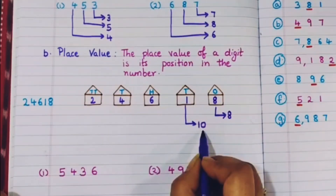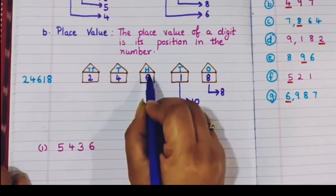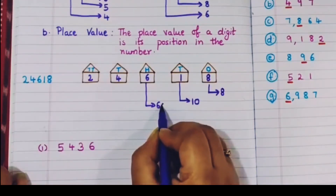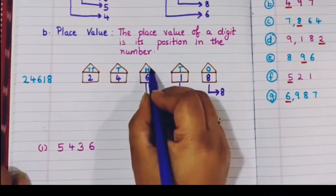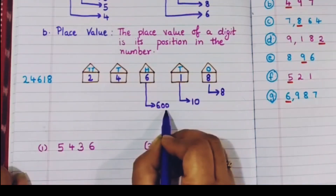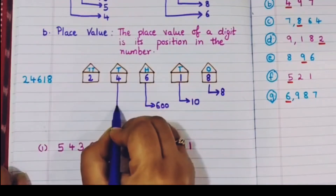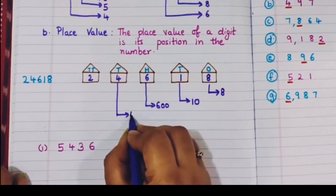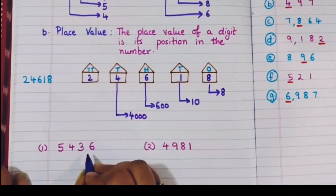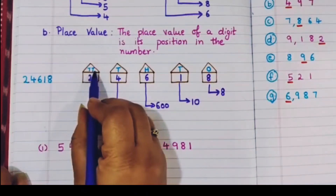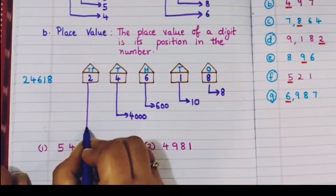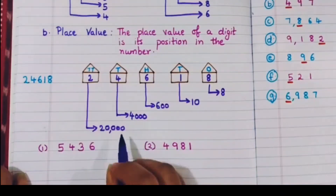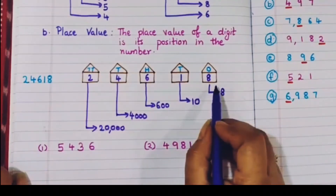6 is present in the 100's house, so the place value of 6 is 600. 4 is present in the 1000's house, so the place value of 4 is 4000. 2 is present in the 10000's house, so the place value of 2 is 20000. I hope the place value is clear — it means the position where a particular digit is present.